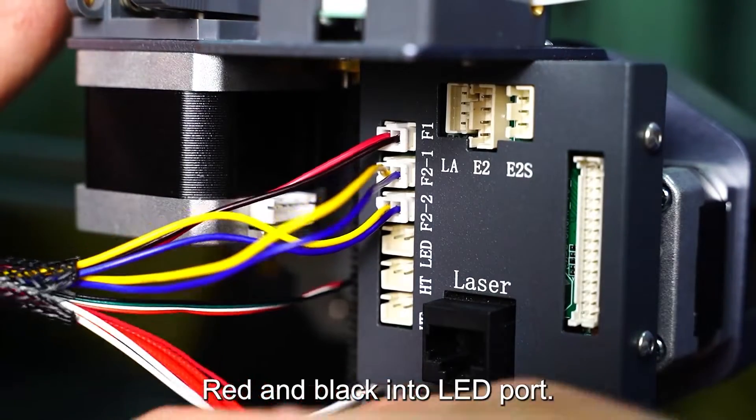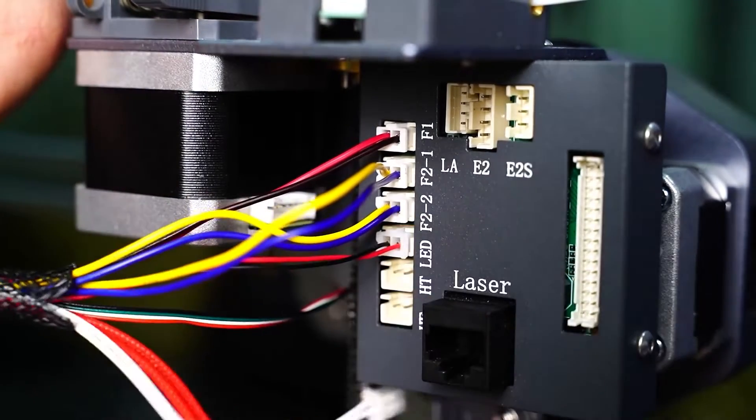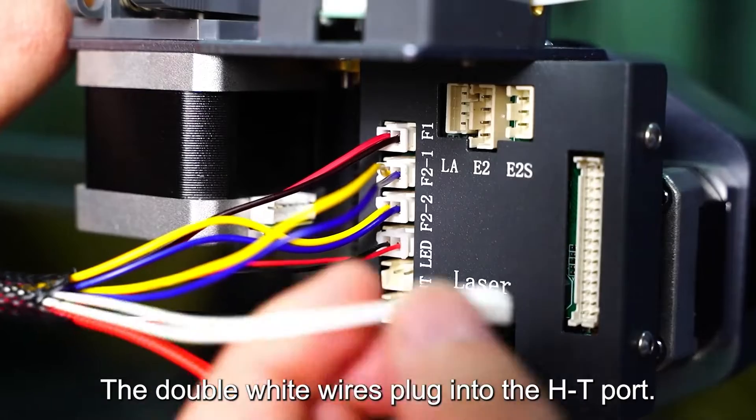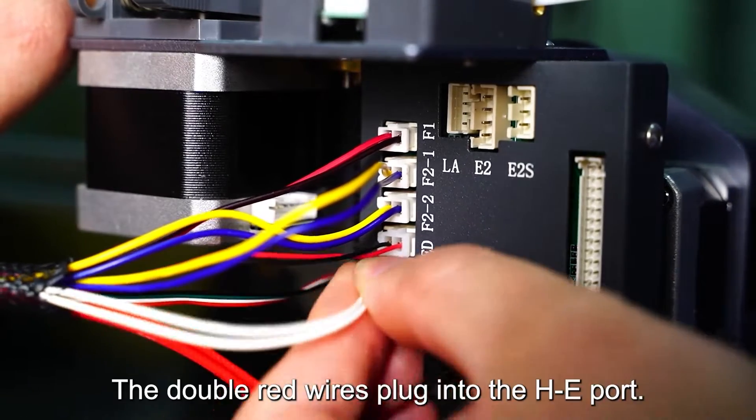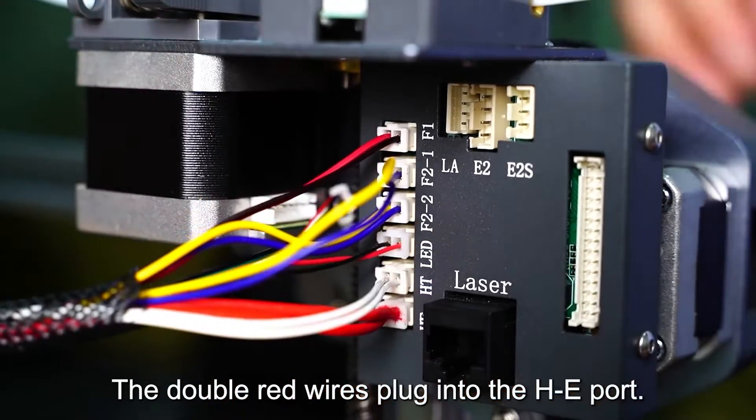Plug the smaller diameter red and black into LED ports. The double white wires plug into the HT port. The double red wires plug into the HE port.